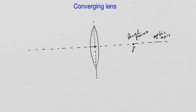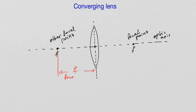However, the lens has another focal point, and that is in front of the lens. For example, if I shone light from right to left upon the lens, it's going to converge at that other focal point. So that is the other focal point, also labeled with F. The distance between the focal points and the center of the lens is known as the focal distance.